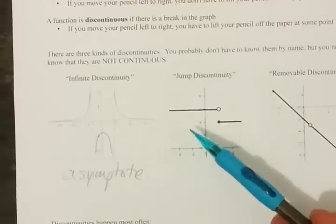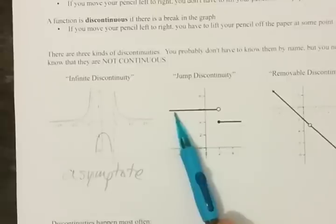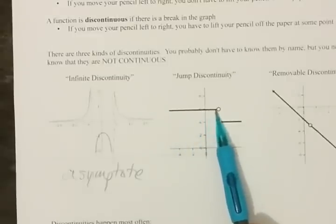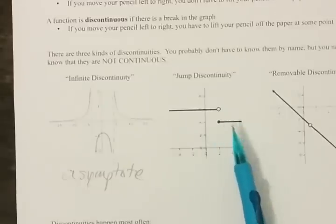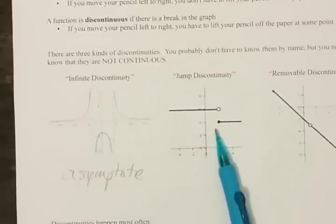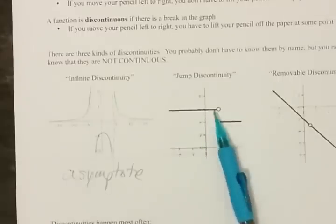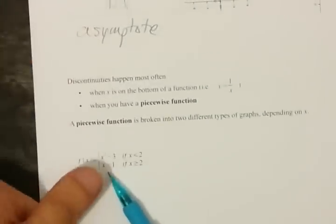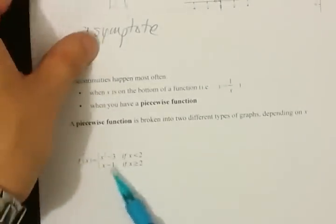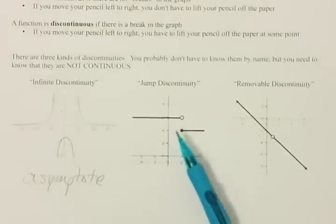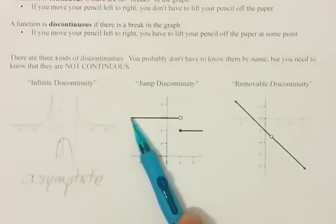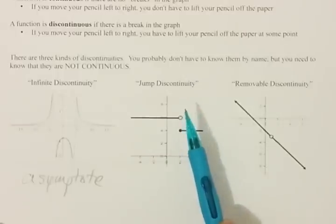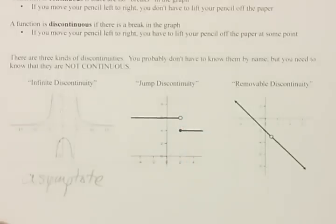A jump discontinuity is something new. This line keeps going until we get to a point, then there's a break, and the line picks up somewhere else. The equations for graphs like this end up being called piecewise functions. They can result in jump discontinuities because you're drawing a regular function, but then your pencil has to jump to another place, and it just continues on from there.